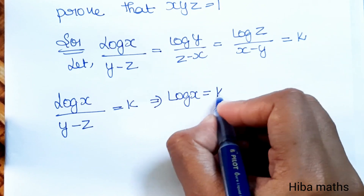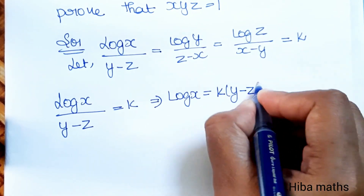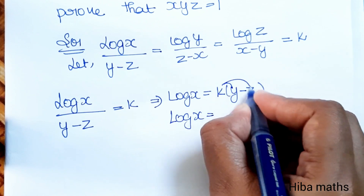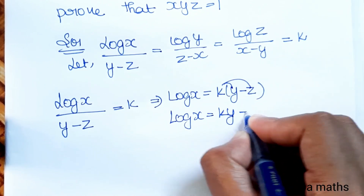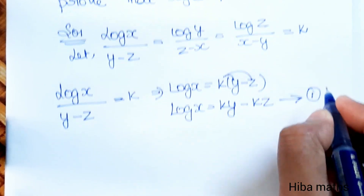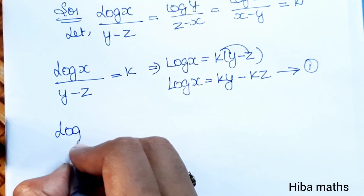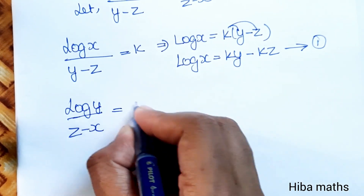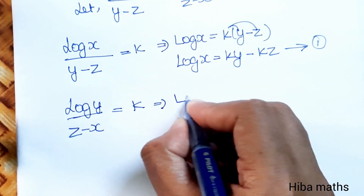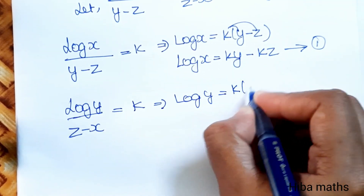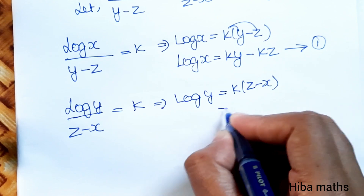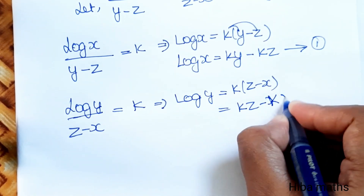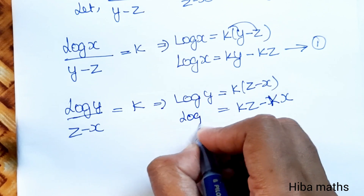So log x = k(y-z) = ky - kz. This is the first equation. Similarly, log y/(z-x) = k gives us log y = k(z-x) = kz - kx. This is the second equation.